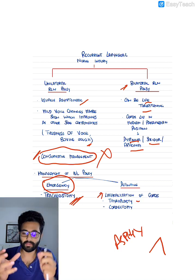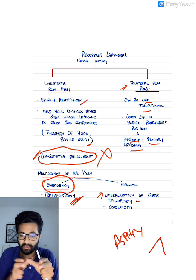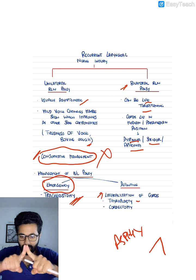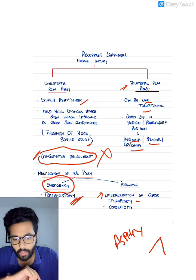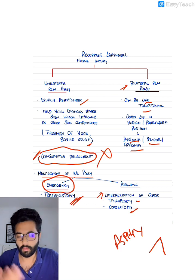There's something called thyroplasty where you modify the thyroid cartilage, not the thyroid gland, but the thyroid cartilage such that again, you split the vocal cords and there's also cordectomy where you cut one side of one vocal cord.